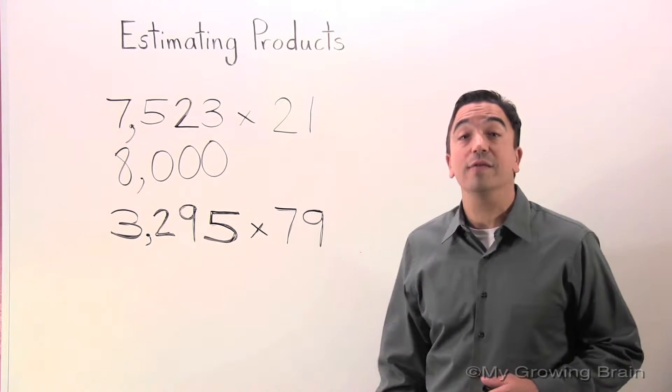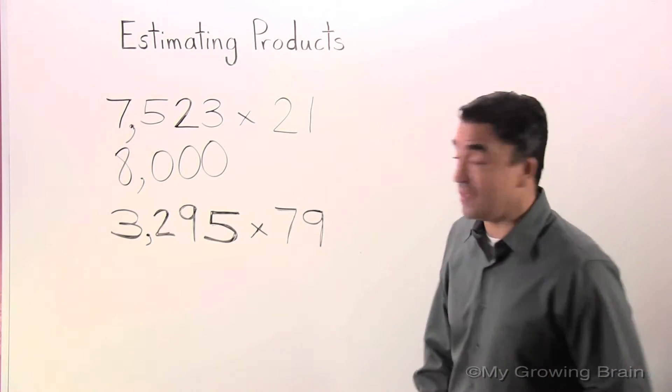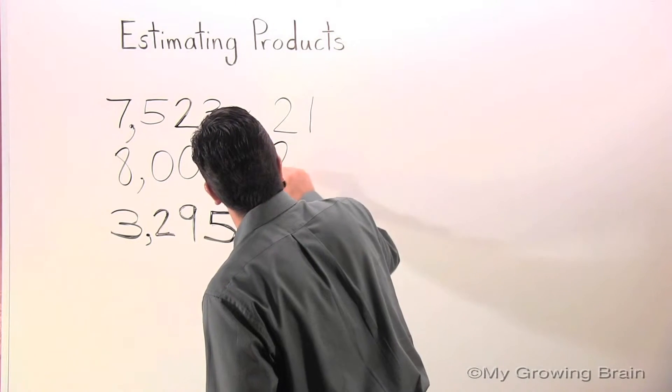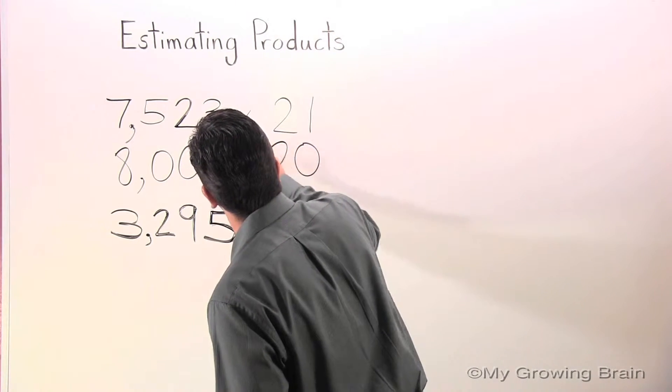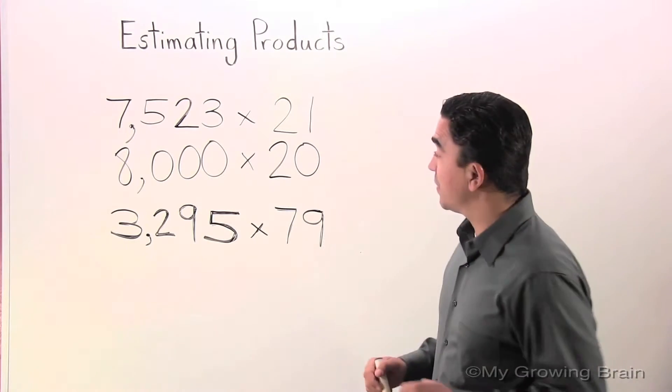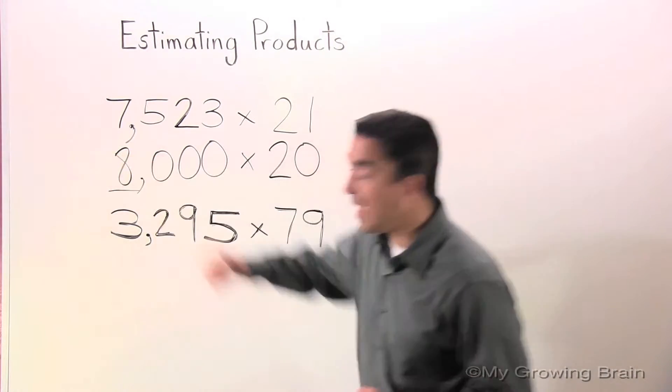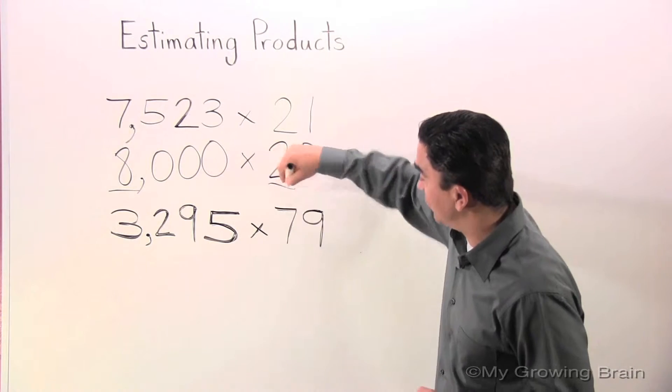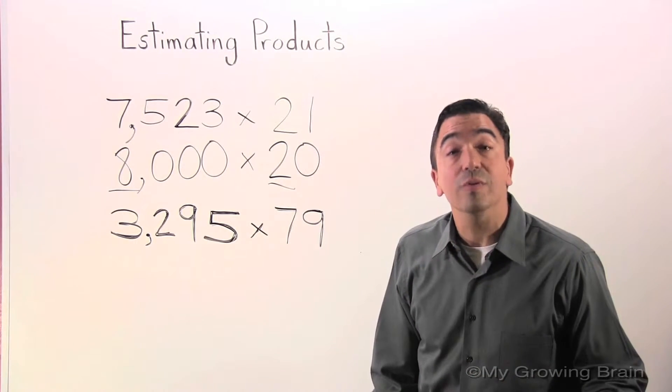I'm going to round 21 to the nearest ten, which is 20. Now, I'm going to use mental math. I'm going to multiply 8 times 2, which is equal to 16.